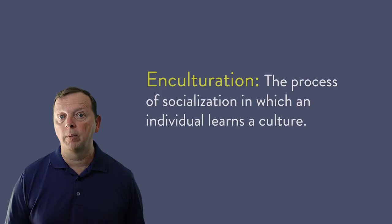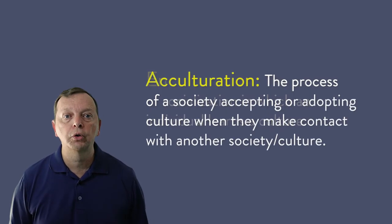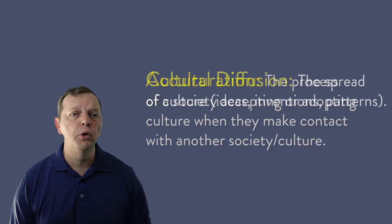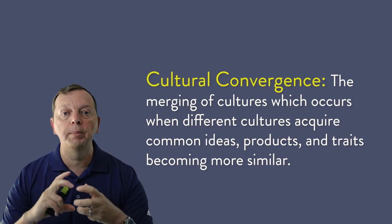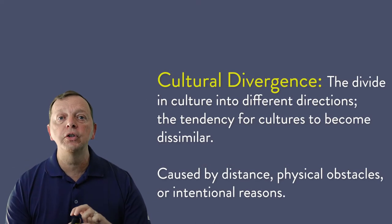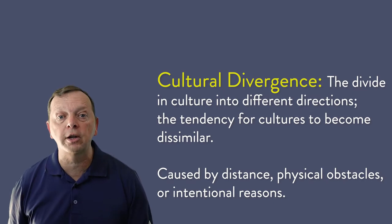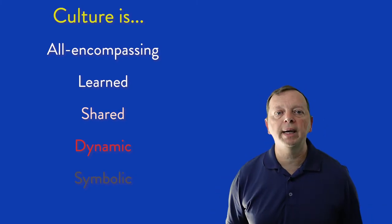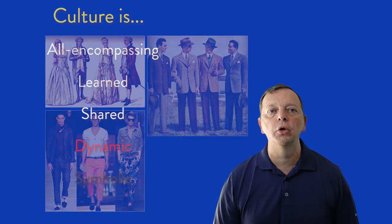Let's quickly review some of the terms we've learned so far. Enculturation is how individuals learn their culture. Acculturation is how societies adopt elements of another culture as their own. Diffusion is how cultures spread. Cultural convergence is how cultures come together and become more similar. Cultural divergence is when societies are separated by distance, physical geography, or intentional actions, and the cultures become more different. And we see that culture is dynamic — dynamic means it is constantly changing. That's what we find in culture.